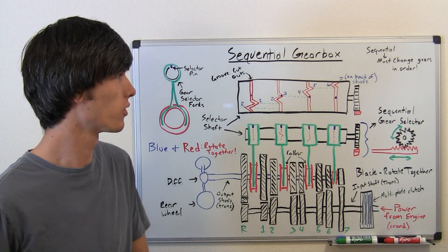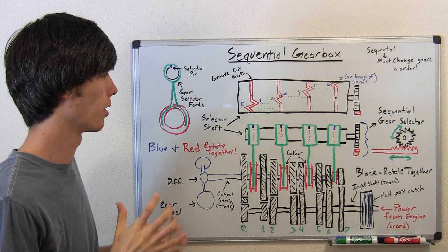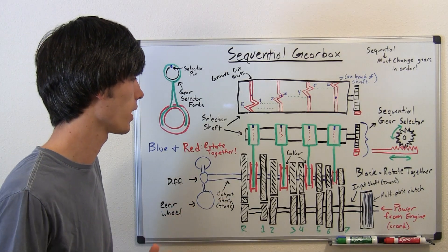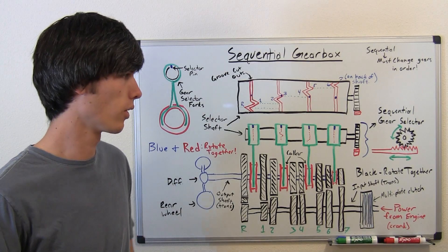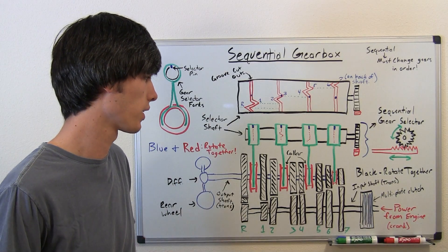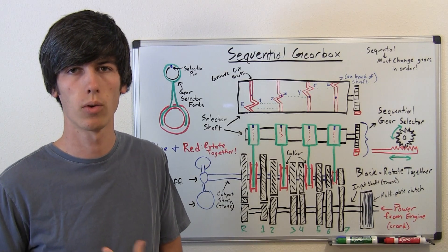Hello everyone and welcome to this week's video. Today I'm going to be talking about sequential gearboxes. More specifically, I'll be going in-depth into an F1 style sequential gearbox. F1 uses seven forward gears and one reverse gear. So that's just the one I've chosen to explain how it works.